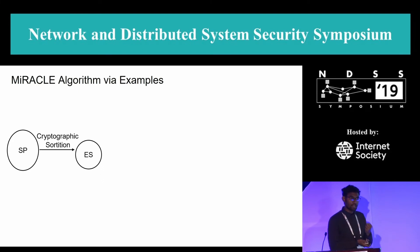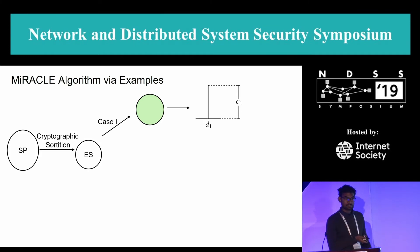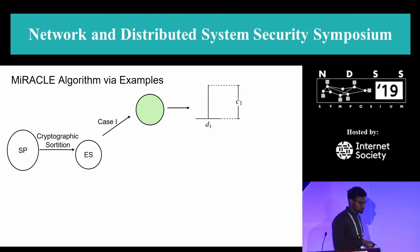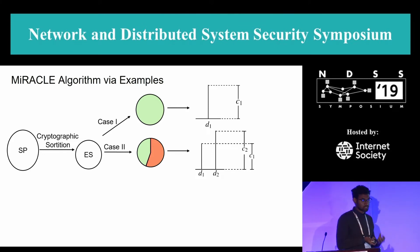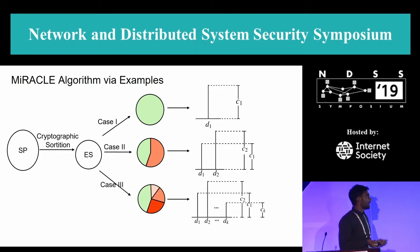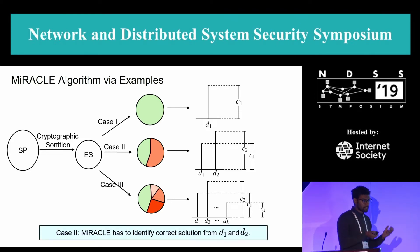Miracle starts by selecting a small ES using cryptographic sortition, which can yield several scenarios. In case one, the entire ES is honest — all nodes submit one solution D1 with count C1. In case two, Byzantine nodes in ES all submit one incorrect solution D2 with count C2. Since ES is very small, Byzantine nodes may dominate. In case three, Byzantine nodes submit multiple different solutions D2 through Dk with respective counts C2 through Ck. Miracle must identify the correct solution from this set.